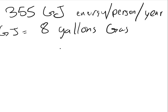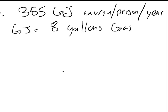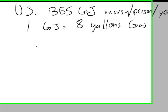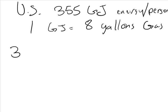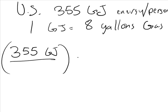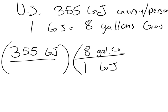So first let's figure out how much gas it takes for a person. So we could set up our factor labeling, which I asked you to do on the quiz. 355 gigajoules per person per year. We want gigajoules to cancel out. So we're going to say 1 gigajoule is equivalent to 8 gallons of gas. So we need to figure out 355 times 8.